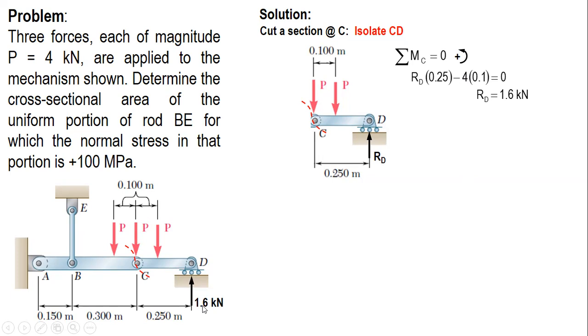We have RD now. After this, we can now cut rod BE. Let's consider the whole mechanism and then cut a section at BE, and we have this force tension. Instead of identifying the reaction at A, we will just use the condition summation of moment about A so the reaction at A has zero moment.